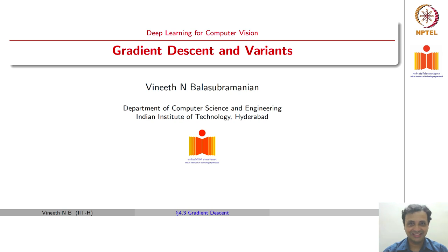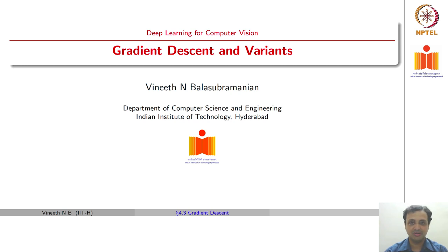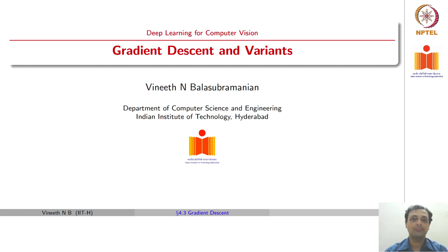We have so far seen an introduction to neural networks and how one can train a feedforward neural network or multilayer perceptron using backpropagation and gradient descent. We will now move on to understanding the challenges of training such a neural network using gradient descent and propose variants and adaptations that could be useful in improving the effectiveness of training neural networks using gradient descent.